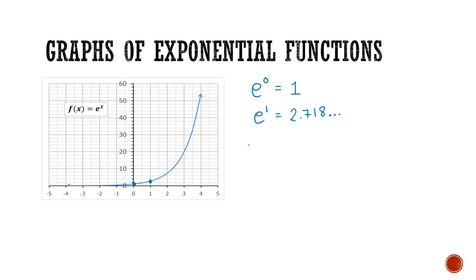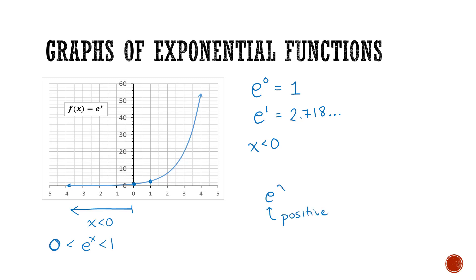For x values less than 0, all our values of e to the power of x are going to be less than 1, but also greater than 0. This is because e itself is positive, so e raised to any x value is always going to be positive — even for negative x values. So when x is less than 0, e to the power of x is between 0 and 1, and when x is greater than 0, e to the power of x is greater than 1.